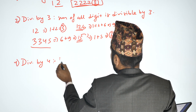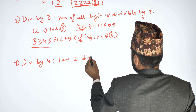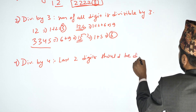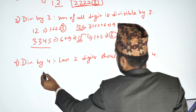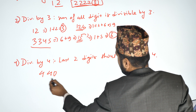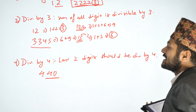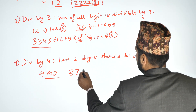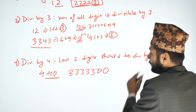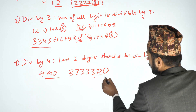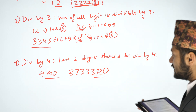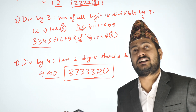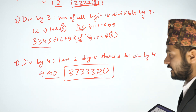Divisibility by 4: the last two digits of the number must be divisible by 4. Check the last two digits to determine divisibility by 4.